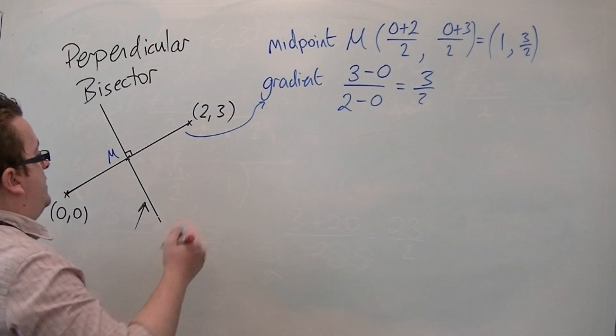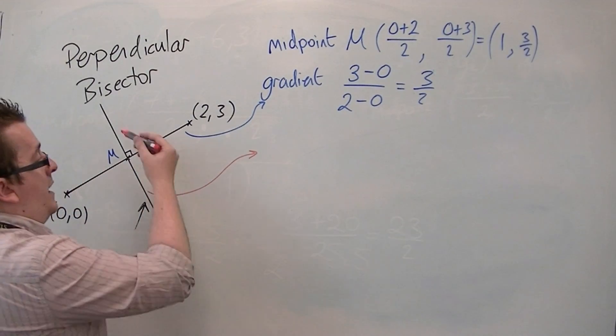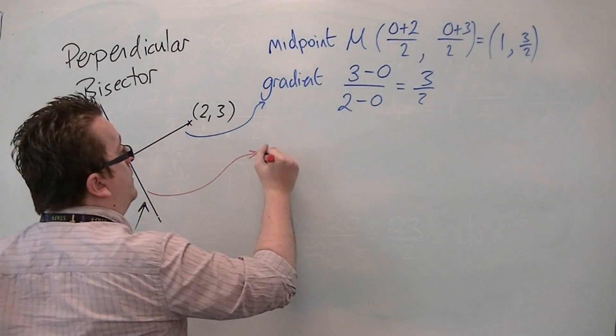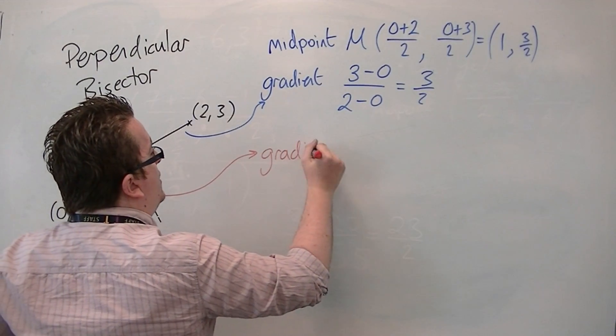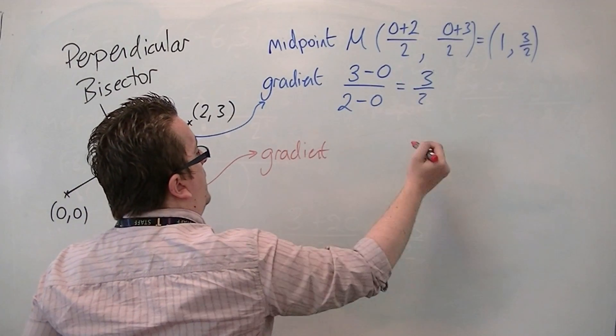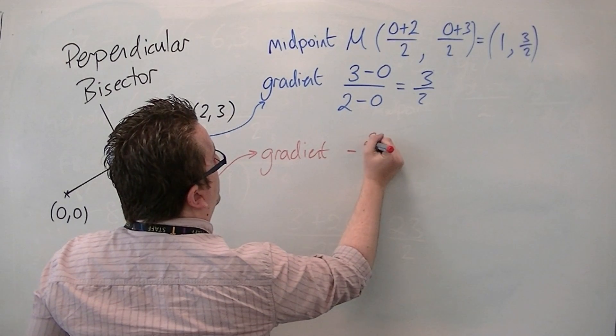So, the gradient of this line, the perpendicular line, is the negative reciprocal of 3 halves, which is minus 2 thirds.